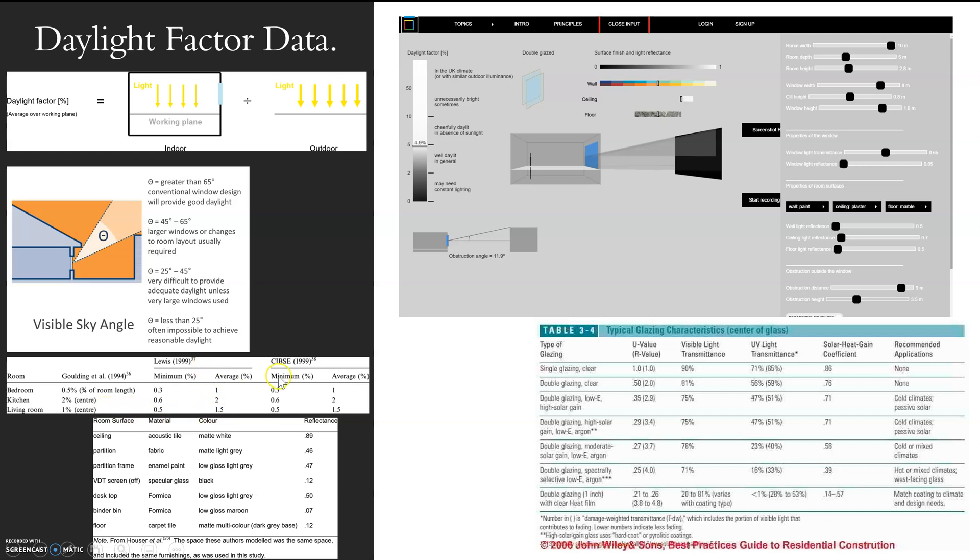However, moving on, we have Lewis and CIBSE which say we need a minimum of the whole space and an average as well. The daylight factor needs to average and it needs to have a minimum - you can't have a really dark space anywhere.